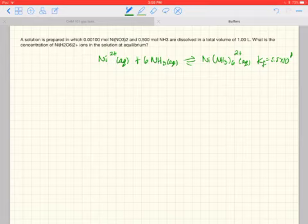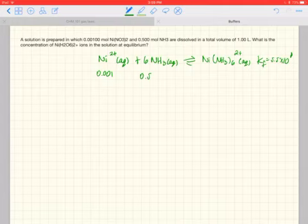Alright, so what do we have here? We are starting out with 0.001 moles of nickel, 0.5 moles of ammonia, and dissolving it in water. So, let's go ahead and see what the limiting reactant is. You can see how this quantity here is extremely small in comparison to ammonia. So, the steps to take here are to first assume that this reaction goes all the way to the right, and then back it off by solving the ice table for an equilibrium.